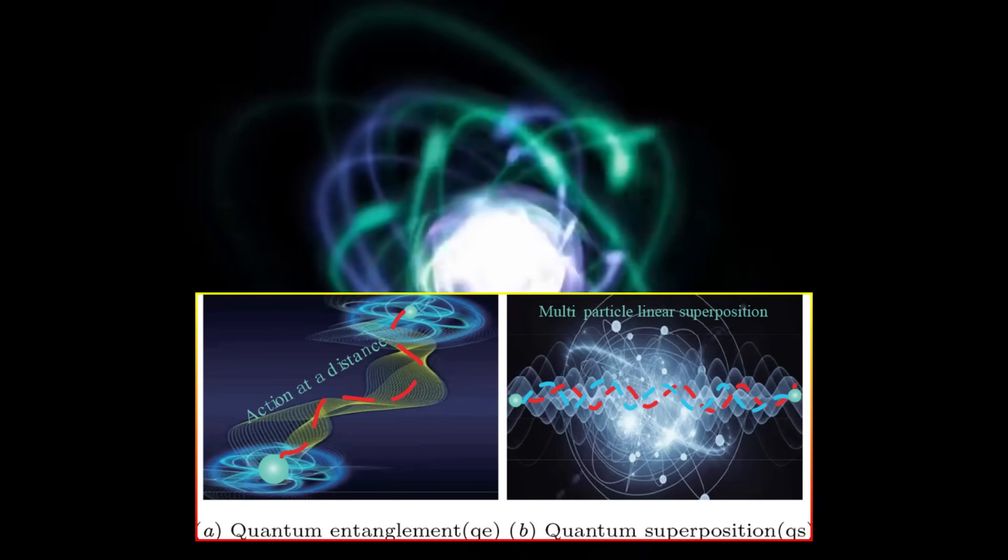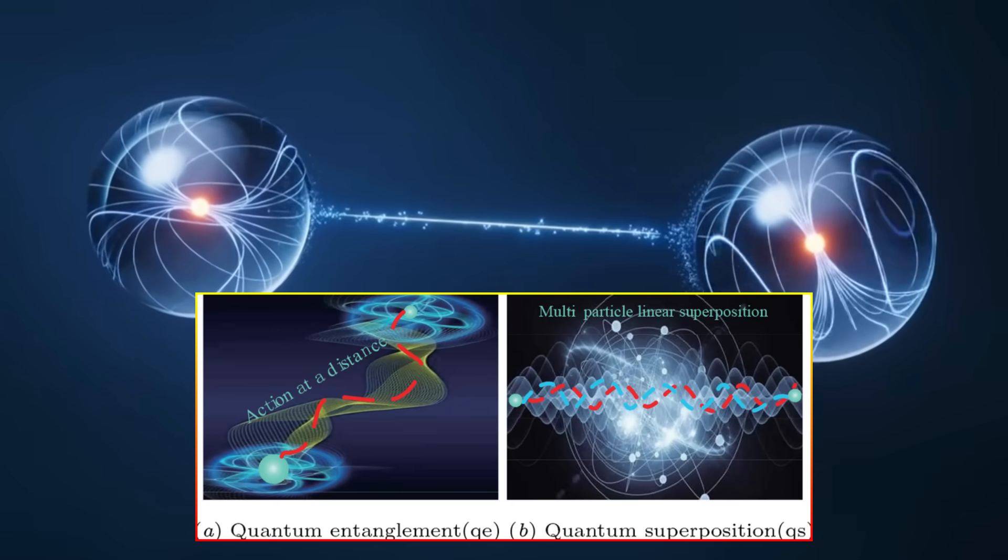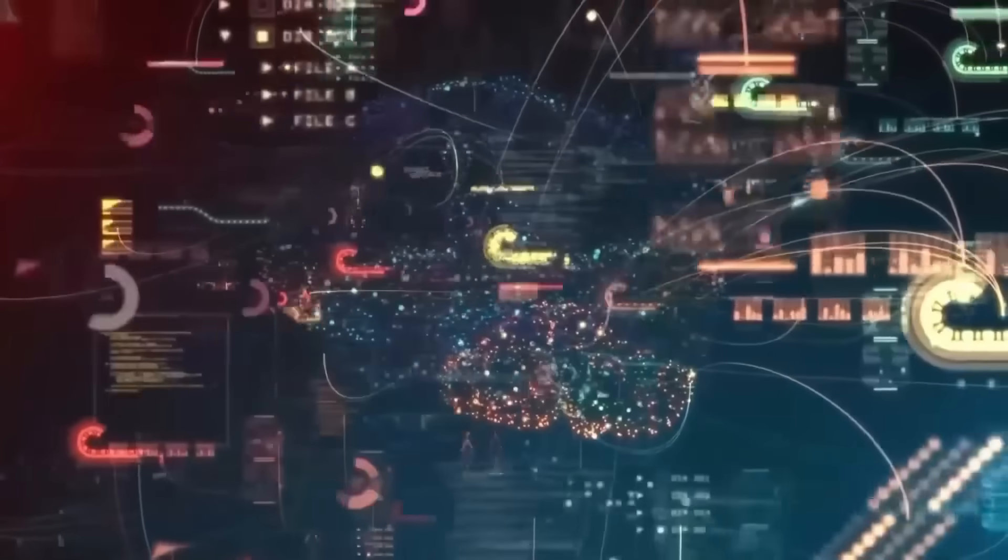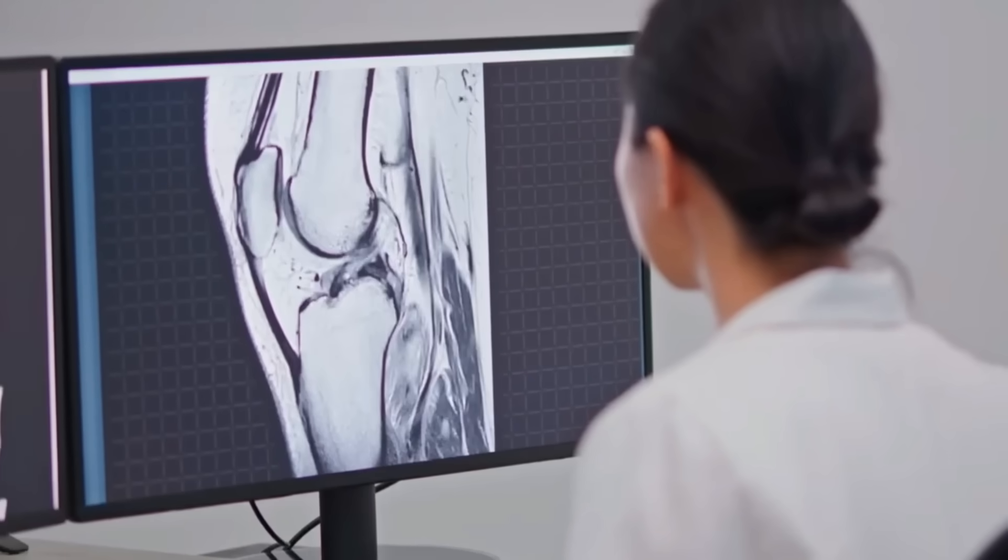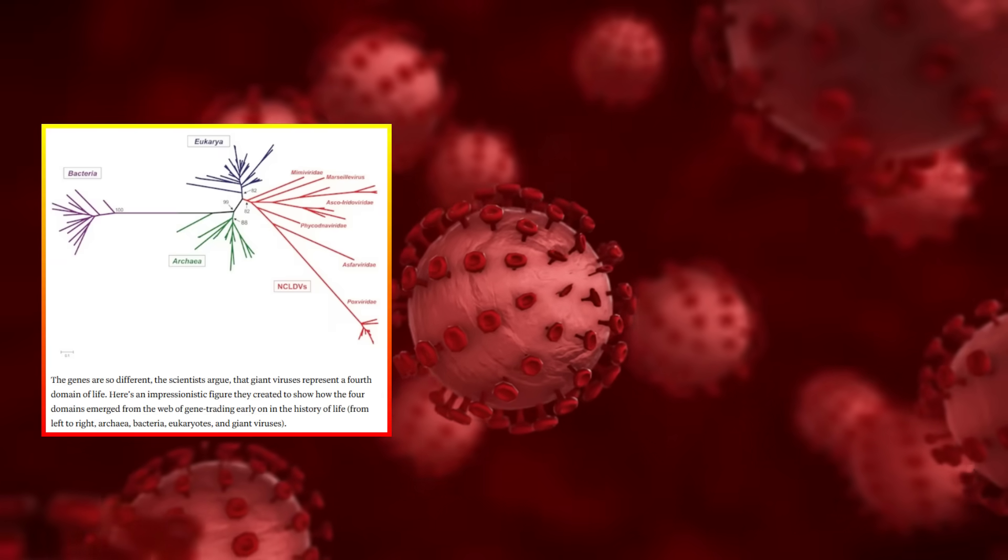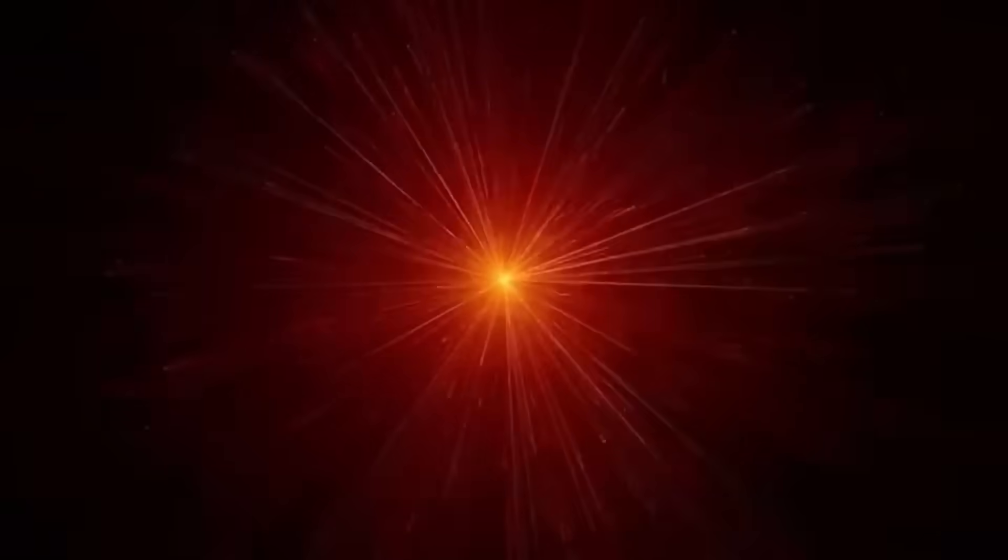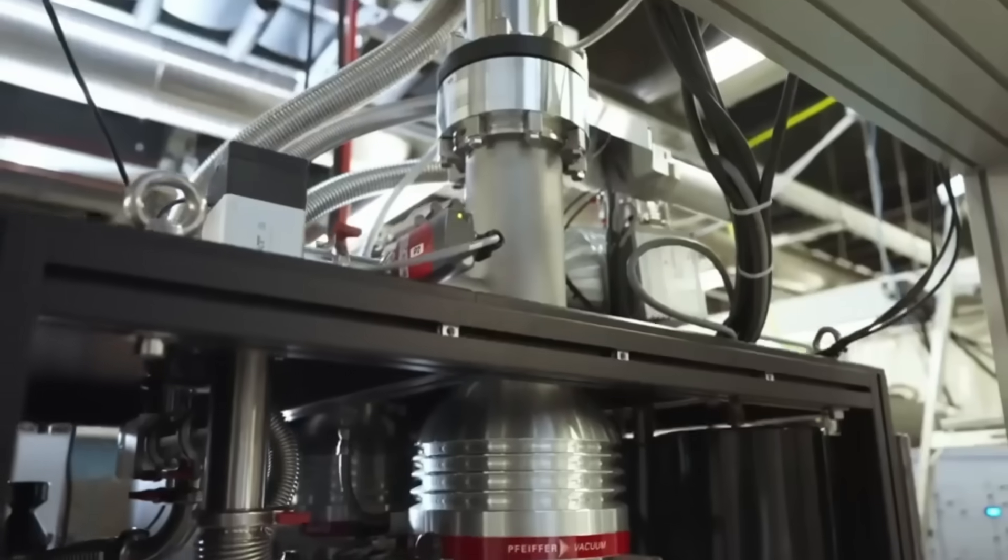For those interested in the technical side, metagenomics is the study of genetic material recovered directly from environmental samples, allowing us to detect organisms we can't culture in labs. And quantum computing uses quantum mechanical phenomena, like superposition and entanglement, to perform calculations that would be impossible for classical computers.